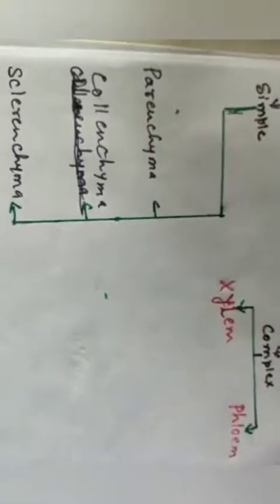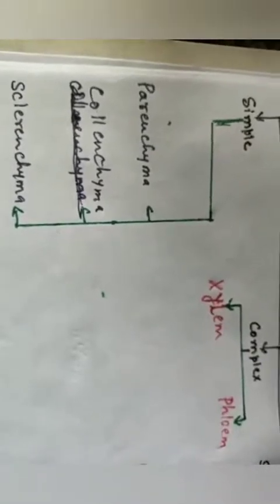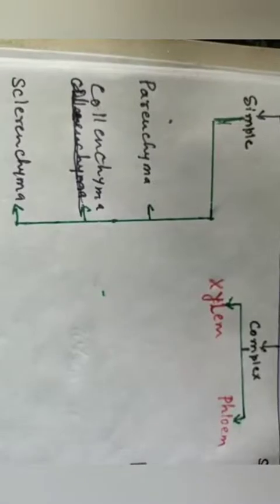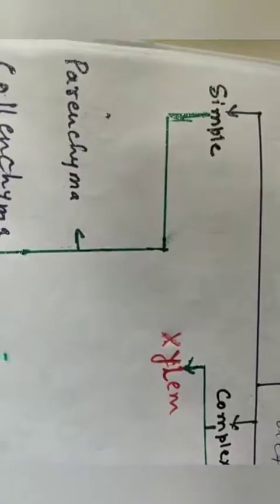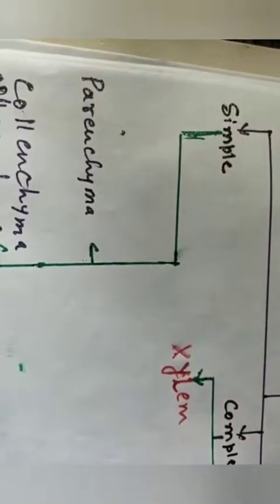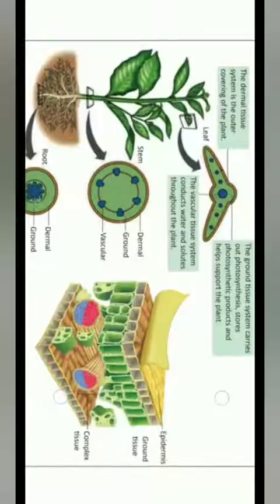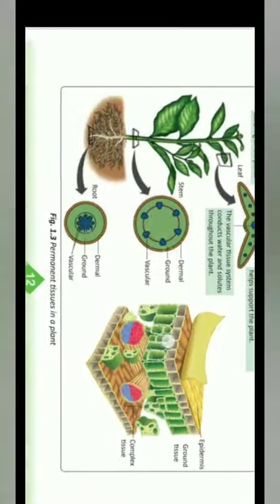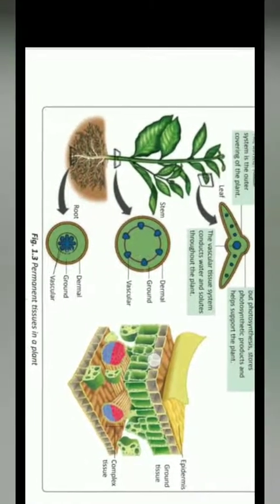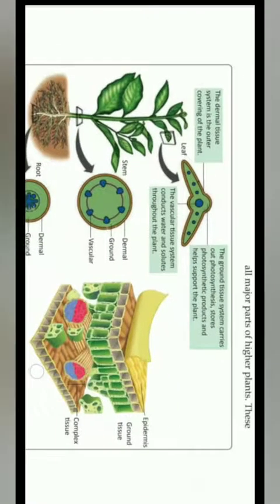The second type is supporting tissue. Supporting tissues are of three types: parenchyma, colenchyma, and sclerenchyma. Now we will discuss parenchyma tissue. Supporting tissues are formed of one type of cells, and these cells provide strength to the plants.